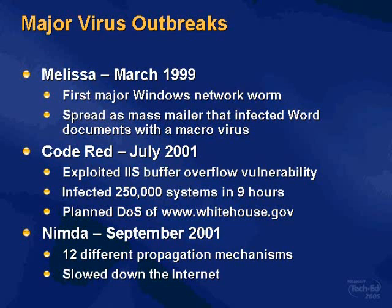The second one is Code Red, which was released in July of 2001. It exploited an IIS buffer overflow vulnerability and infected 200,000 systems in nine hours — a very fast rate of spreading.